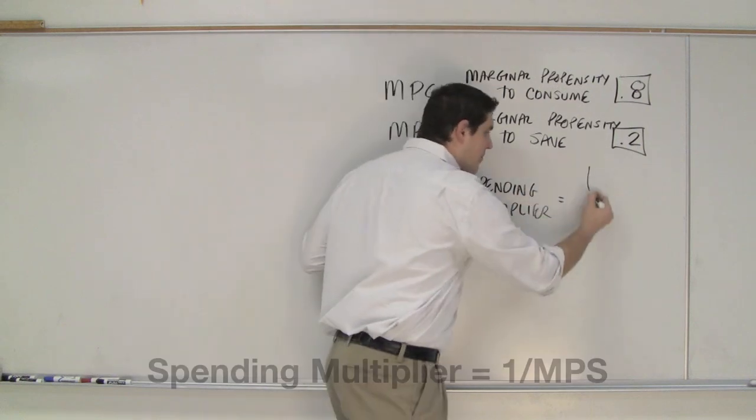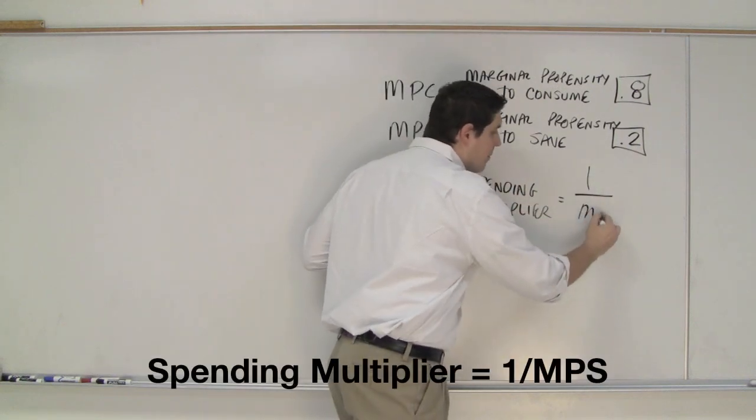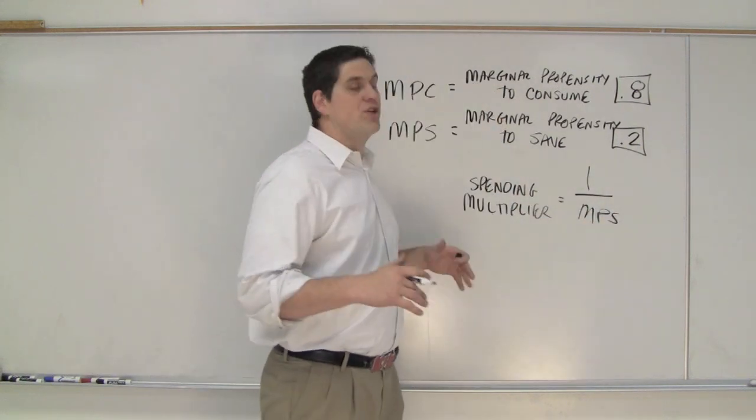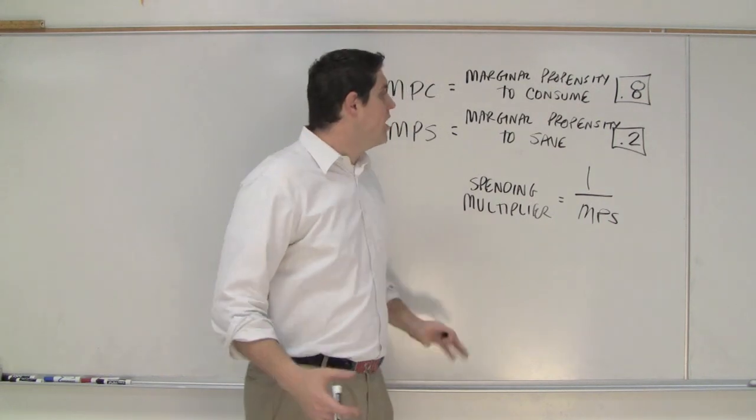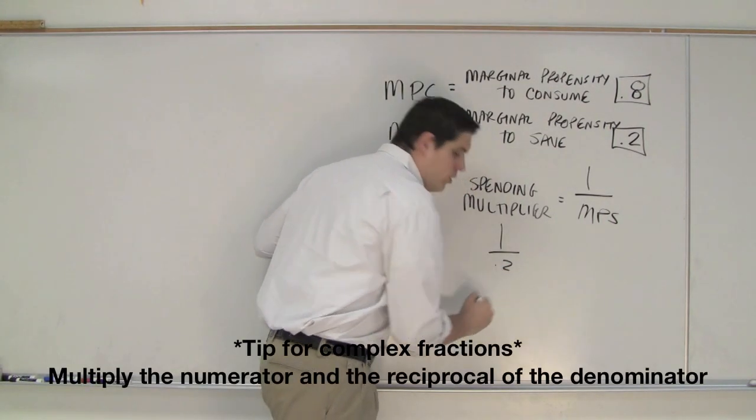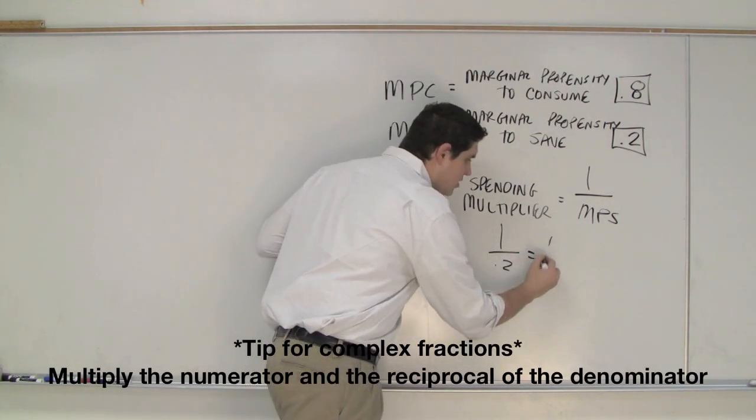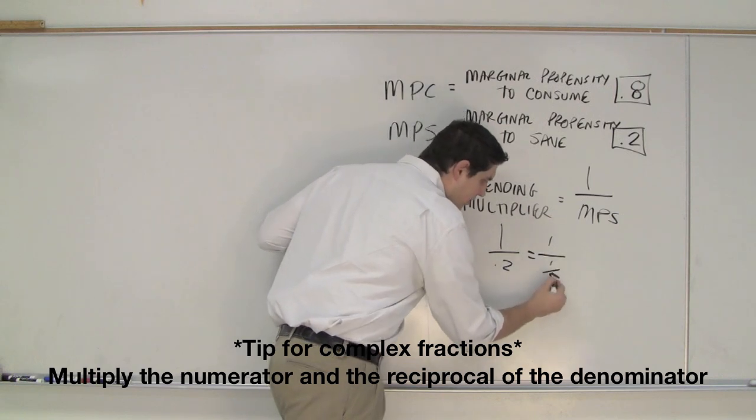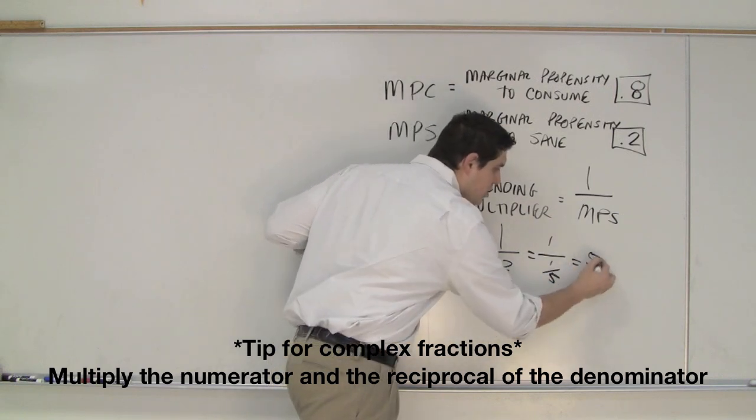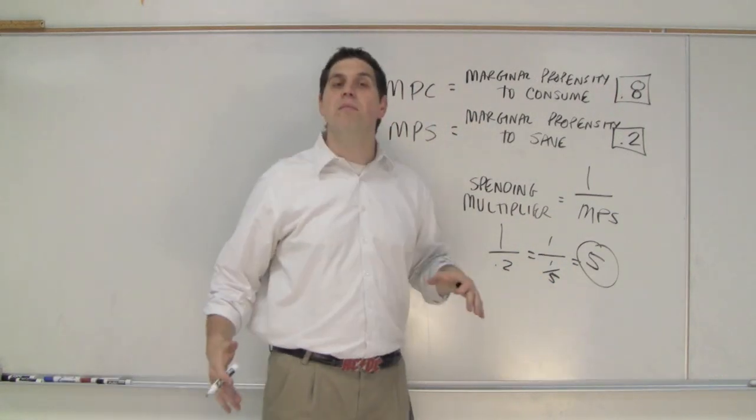The spending multiplier, for math purposes, 1 over the marginal propensity to save. So in this situation, how much is the spending multiplier? The spending multiplier is 1 over .2. And 1 over .2 is 1 over 1 fifth. A little bit of math tells you the multiplier is 5. What does that mean?